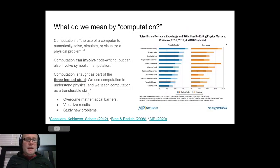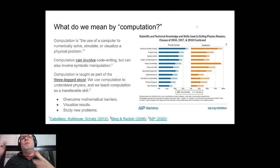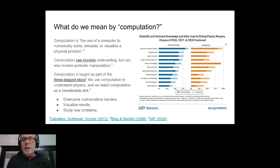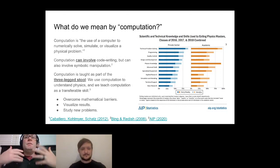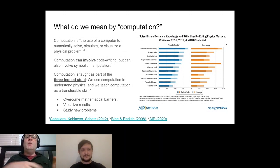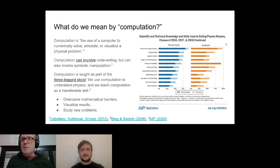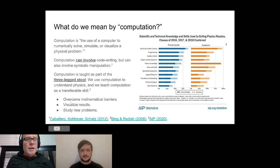Another reason this is a big deal: computation is a high-demand, transferable skill. The data on screen is from a relatively recent American Institute of Physics survey of recent physics master's degree graduates — we see similar results for bachelor's and PhD graduates. When you ask them what they spend most of their time doing in their job, programming comes in very highly, especially in the private sector. More than 75% of respondents say they use programming daily, weekly, or at least monthly. To the degree that we incorporate computation, we are helping students prepare for their careers by making our classroom look like what their careers look like.